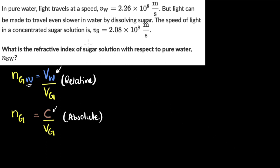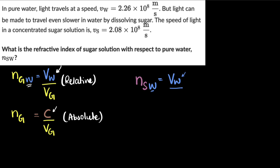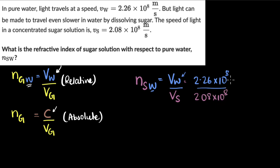Time for a second problem. Pause the video, give it a read, and see if you can solve it yourself. This time we are given the speed of light in two media — water and sugar solution — and we are asked to find the refractive index of sugar solution with respect to pure water. That is the speed of light in water divided by the speed of light in sugar solution. Velocity of light in water is 2.26 times 10 to the 8, divided by 2.08 times 10 to the 8 in sugar solution — both in meters per second. The units cancel, and we get 1.09.